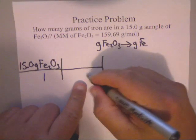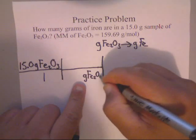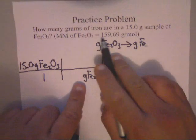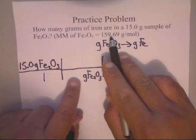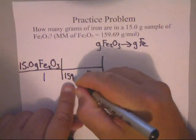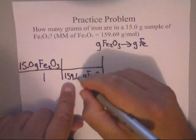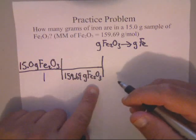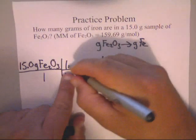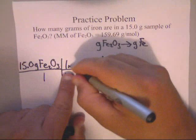So that'll be 15 grams of Fe₂O₃ over 1. This is grams of Fe₂O₃, and guess what goes down here? You're right, it's going to be grams of Fe₂O₃. Up here we need to use the molar mass, so this is going to be 159.69. This is the molar mass in one mole of Fe₂O₃.